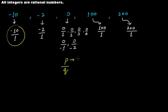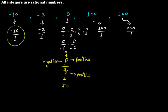P can be a positive integer, it can be 0, and it can be negative. Q cannot be equal to 0 — it can be positive or negative. So in this case minus 10 is negative and 1 is positive, so yes this is a rational number. In this case minus 2 is negative, 1 is positive — so yes this is a rational number.